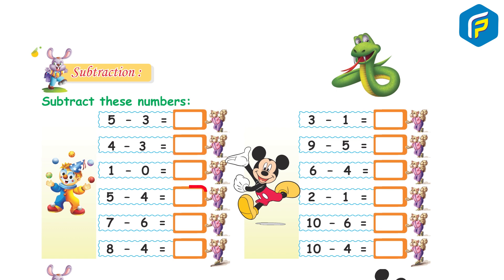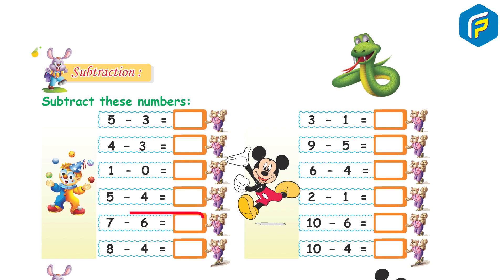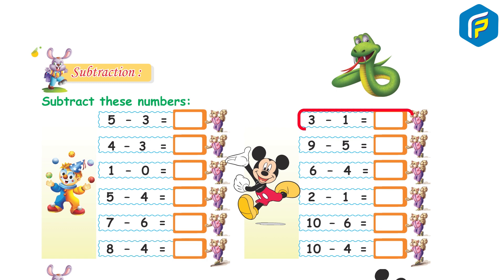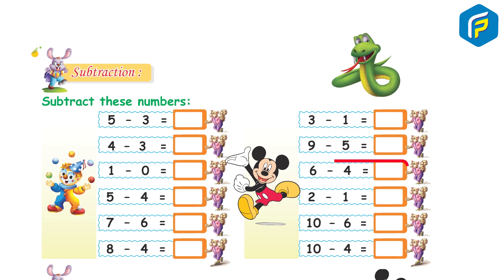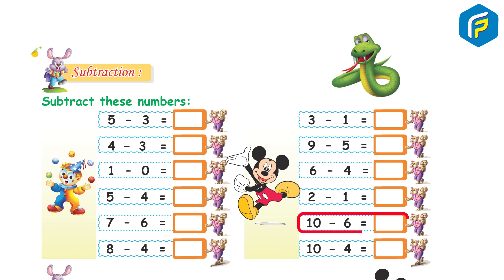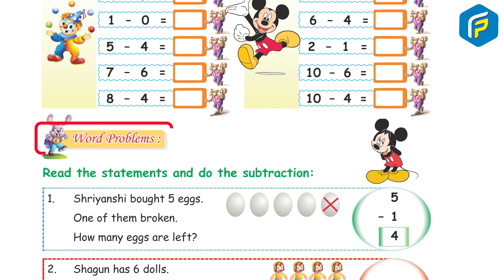Subtraction practice: 5 minus 3, 4 minus 3 is equal to 1, 1 minus 0, 5 minus 4, 7 minus 6, 8 minus 4, 3 minus 1, 9 minus 5, 6 minus 4, 2 minus 1, 10 minus 6, 10 minus 4. Solve these problems.